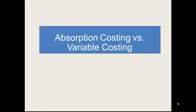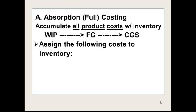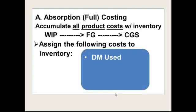In this presentation we're going to look at absorption costing and variable costing — two methods for computing the income statement. We've actually looked at both of them before. We're going to start by looking at absorption costing. You have seen this before earlier in the course. This is where we accumulate all product costs with inventory, and those costs go through work in process to finished goods to cost of goods sold. The costs included are direct material used, direct labor, and overhead applied.